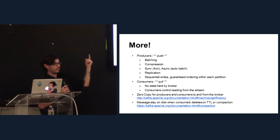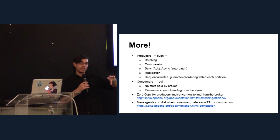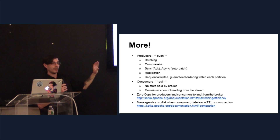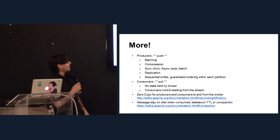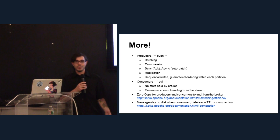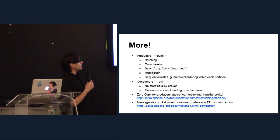On the producer side, there's batching — a lot of the performance comes from being able to batch a whole bunch of messages in one send. There's compression, which is actually at rest, so you can compress something and it'll sit there compressed. There are both synchronous and asynchronous producers. There's a whole bunch of other variations for throttling durability in the next version coming out, plus replication and sequential ordering guarantees for each partition.